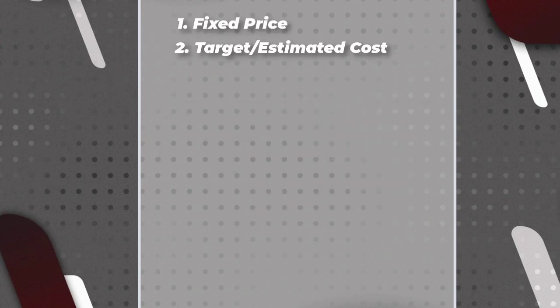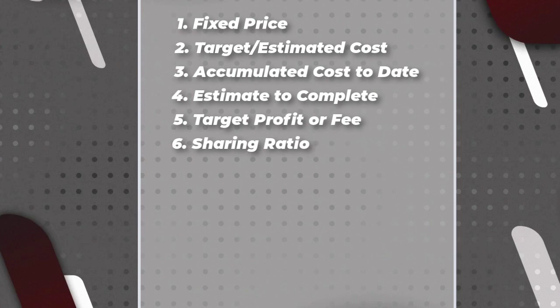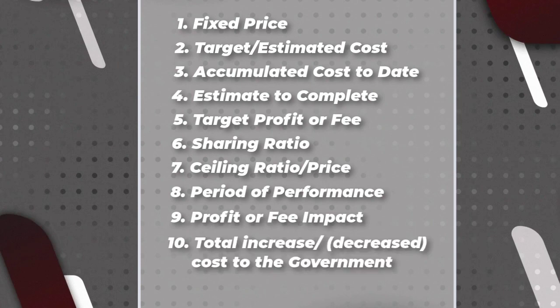The following is a list of data that may be applicable based on the contract types of the CAS-covered contracts: the fixed price, the target or estimated cost, accumulated cost to date, the estimate to complete, the target profit or fee, sharing ratio, ceiling ratio, period of performance, profit or fee impacts, and the total increase and decrease costs to the government.